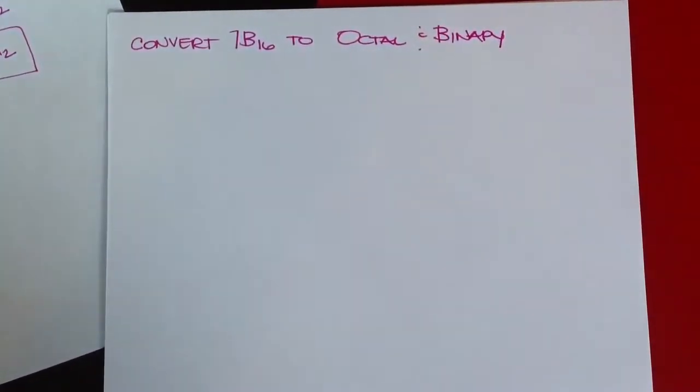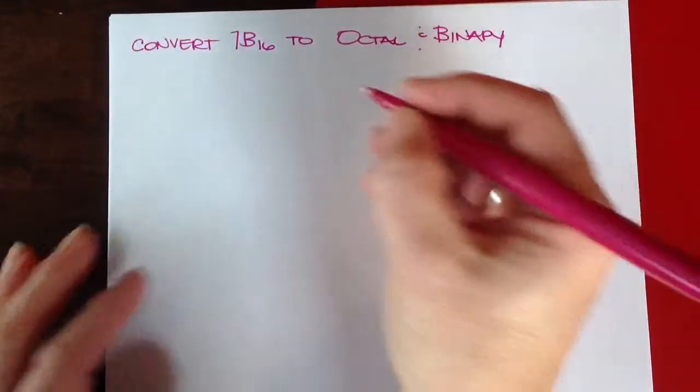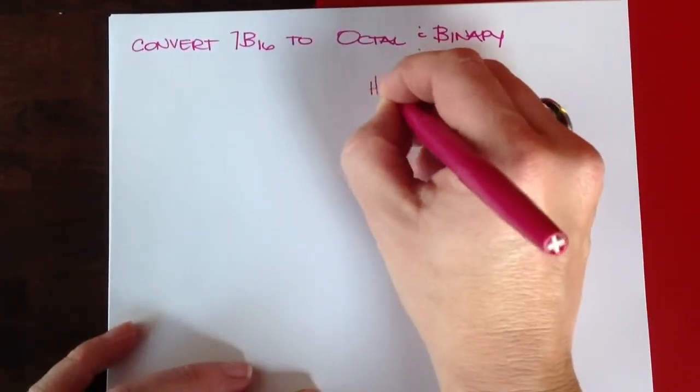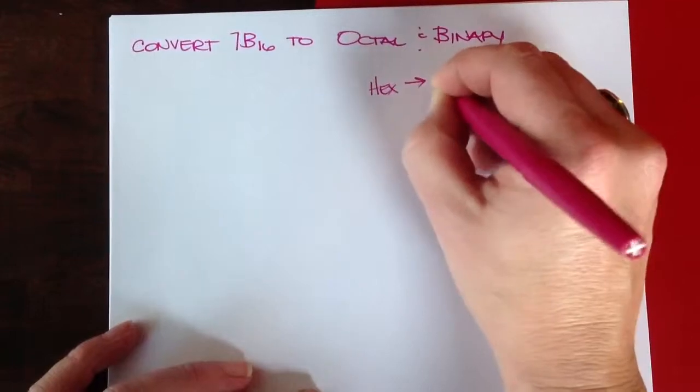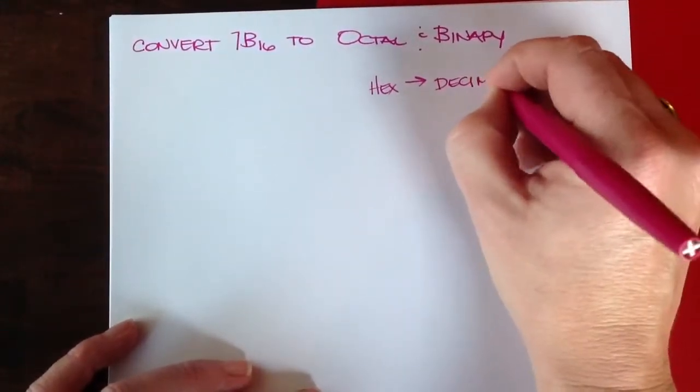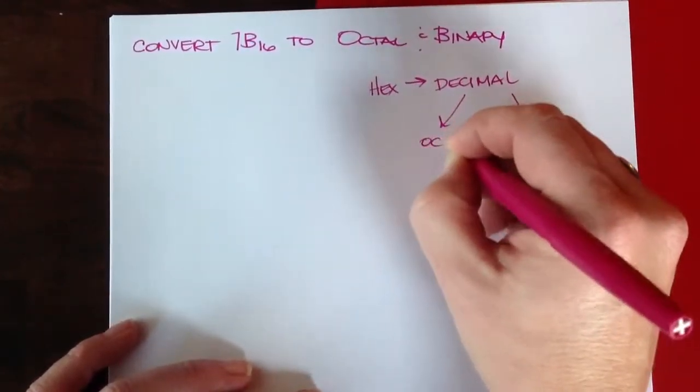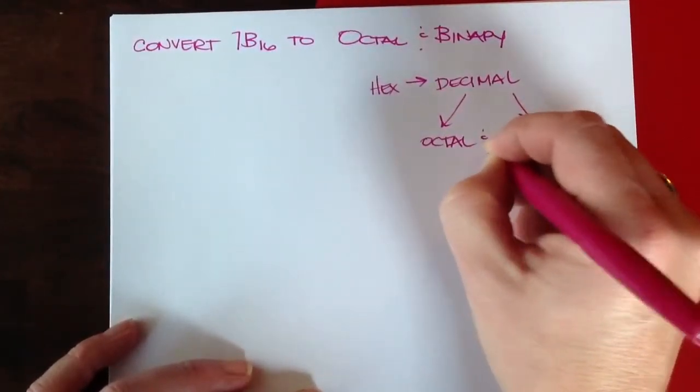Okay, so let's convert 7B16 to octal and binary. Normally we would take this hex number, go to decimal, and then from there we would go to octal and binary.